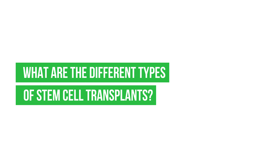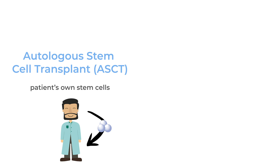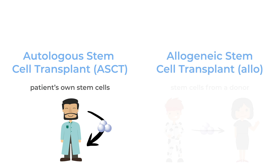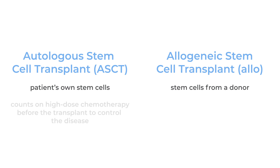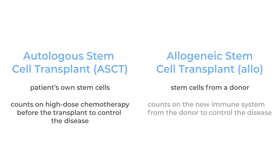What are the different types of stem cell transplants? There are two kinds of transplants: autologous, using the patient's own stem cells, and allogeneic, using stem cells from a donor. Autologous relies on high-dose chemotherapy given before the transplant to control the disease, while allogeneic counts on the new immune system from the donor to control the disease.